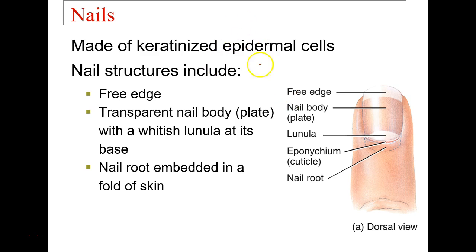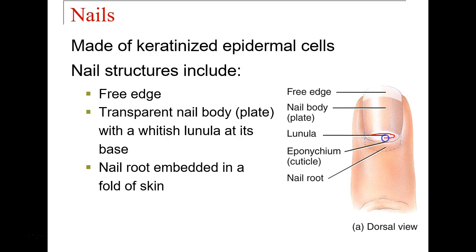Nails are keratinized epidermal cells as well, similar to hair but obviously a little tougher and more rigid. Parts of the nail include: the free edge, which is the end of the nail; the main body of the nail; the lunula, the small white half-moon at the base of the nail; the cuticle or eponychium; and the nail root, which is underneath the skin.